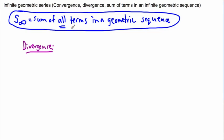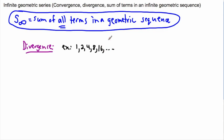Let's do an example of something that diverges. We'll do a geometric sequence that doubles every time: 1, 2, 4, 8, 16, 32, 64, and so on.